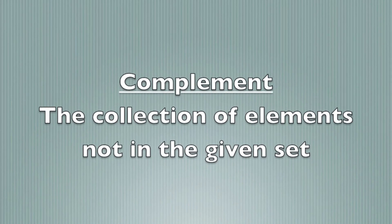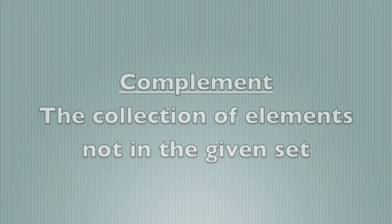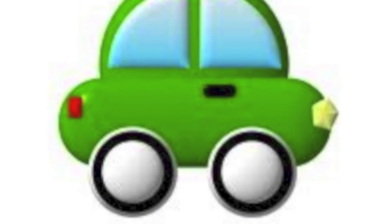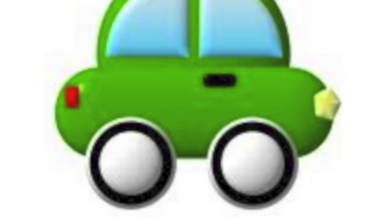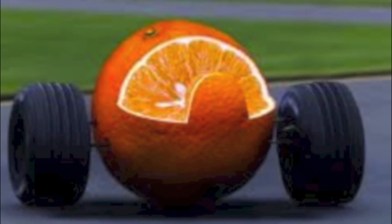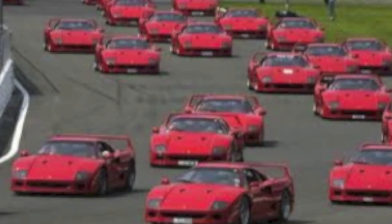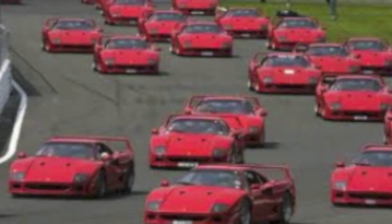The complement of a set is the collection of all elements not in the given set. The complement of the set of green cars would contain orange cars, red cars, and pickles.